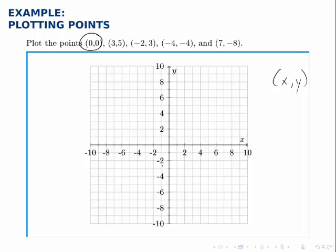So for instance, (0,0): we start at the origin and go 0 units to the right or left, and 0 units up or down, so we don't move at all. The point (0,0) is just the origin.